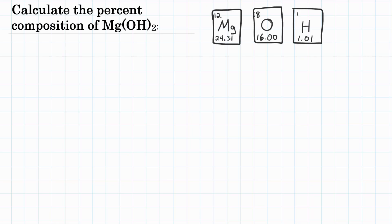Alright everyone, the problem is to calculate the percent composition of Mg(OH)₂, otherwise known as magnesium hydroxide. The first step is to get the grams, or the mass, of each of these elements in Mg(OH)₂.